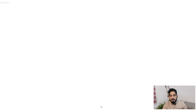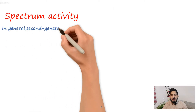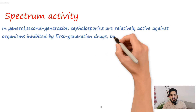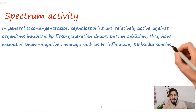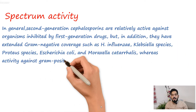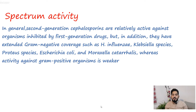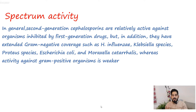The spectrum of activity of second generation cephalosporins: in general, second generation cephalosporins are relatively active against organisms inhibited by first generation drugs, but in addition they have extended gram-negative coverage such as Haemophilus influenzae, Klebsiella species, Proteus species, Escherichia coli, and Moraxella catarrhalis. Activity against gram-positive organisms is weaker than first generation cephalosporins.